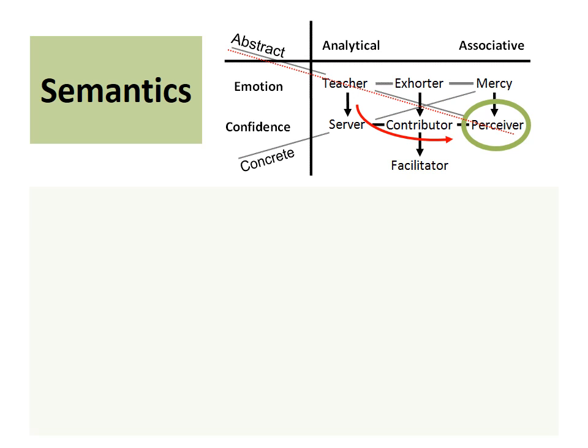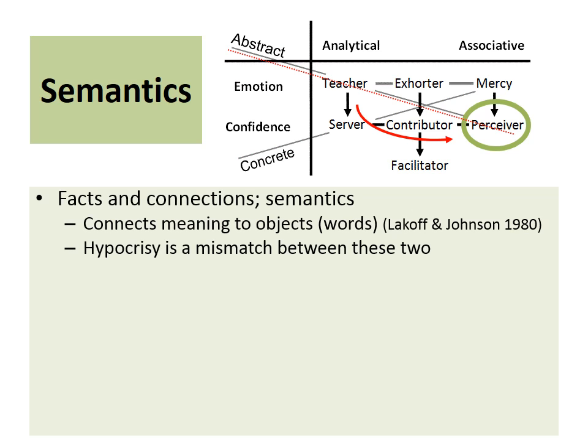Moving on now to the right hemisphere, we are dealing here with semantics — the meaning of words. Notice how the red arrow goes from teacher, the raw element with the words, through server which provides syntax and structure, and now we are going to map words with their meanings. Looking at the perceiver person: he thinks in terms of facts and connections. The raw elements of mercy experiences are placed within perceiver categories — perceiver does object recognition by placing experiences into categories, for example categories of cars, trees, or tables.